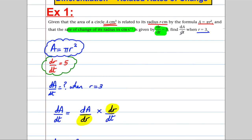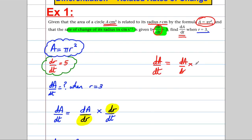The big idea was: we want dA/dt, so we need dA on top. We have a formula relating A and r, so we can work out dA/dr. And we're given dr/dt. Multiplying them together, the dr cancels and we get dA/dt. Let's apply the same idea in example two.